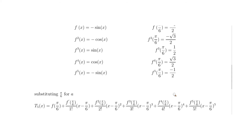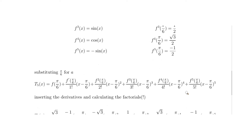Now we substitute pi/6 for all the 'a' values in the Taylor polynomial formula, giving us the 5th degree Taylor polynomial centered at pi/6 with pi/6 inserted wherever 'a' appeared.